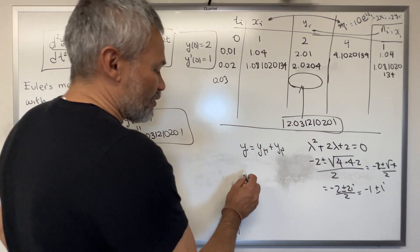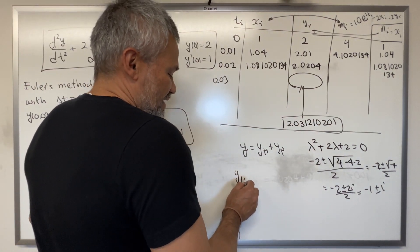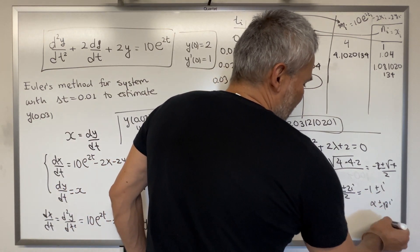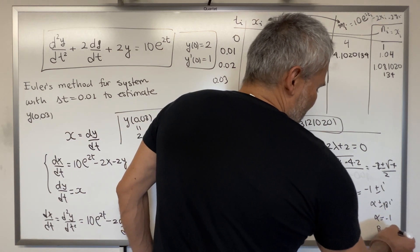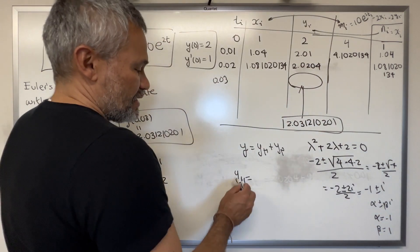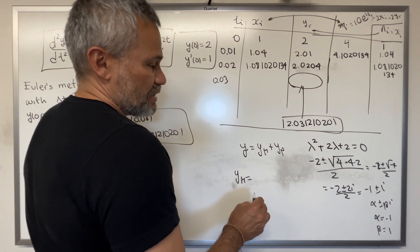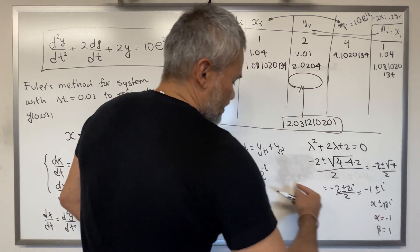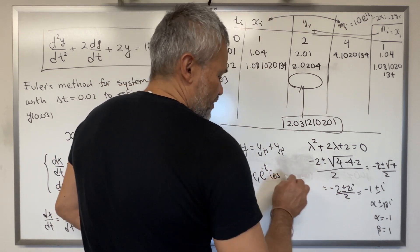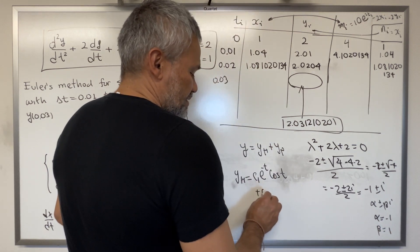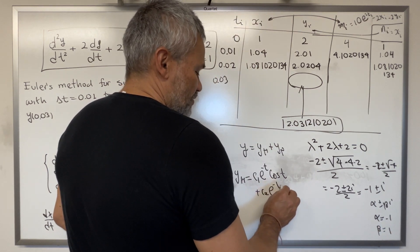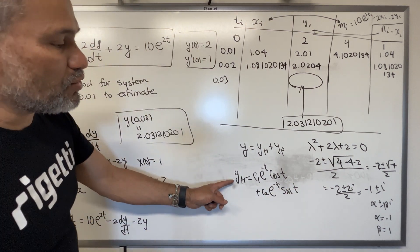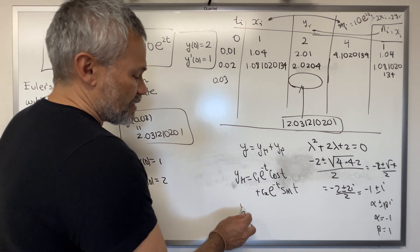Since α = −1 and β = 1, the solution of the homogeneous equation is: yₕ = c₁e^(−t)cos(t) + c₂e^(−t)sin(t).